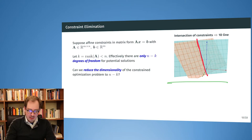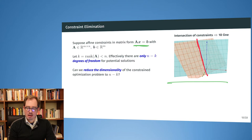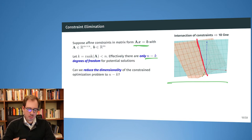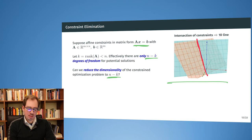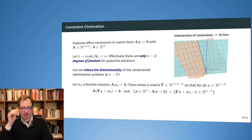If we take matrix A with the constraints and look at its rank, we find that the rank will in many cases be less than n. Therefore we still have many possible solutions, but effectively only n minus k degrees of freedom, where k is the rank of the constraints. We want to reduce the optimization problem to dimensionality n minus k, taking out those k dimensions completely and looking only at the remaining degrees of freedom.